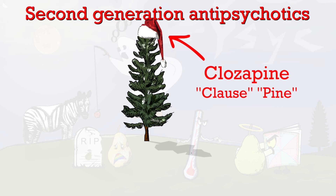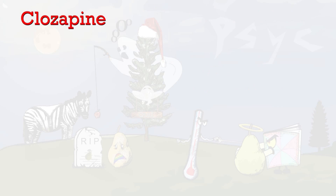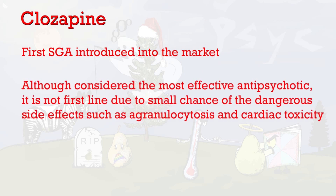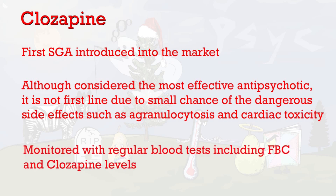Clozapine was the first second-generation antipsychotic introduced to the market. Although considered the most effective antipsychotic, clozapine is not first-line therapy due to the risk of agranulocytosis, a dangerous leukopenia, and is usually only used in individuals who have failed at least two other antipsychotics. Furthermore, high clozapine levels have been associated with cardiac toxicity. For these reasons, patients must be monitored with regular blood tests including full blood counts and clozapine levels.